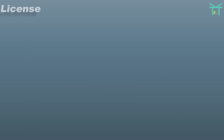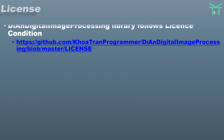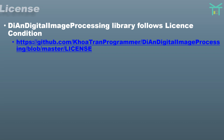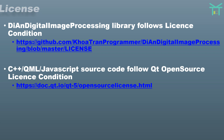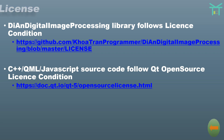Regarding licensing, the DADIP digital image processing library follows its own license conditions. The C, C++, QML, and JavaScript source code follow the Qt open source license conditions.